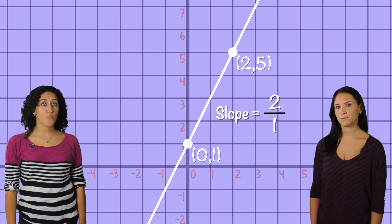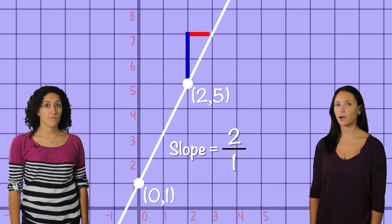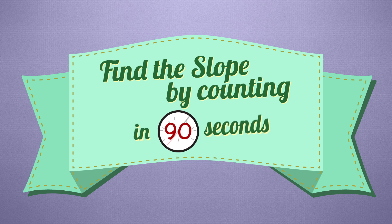To check, we can plot new points and see if they fall on the line. Here's 2 up and 1 over. It falls right on the line. And that's finding the slope by counting in 90 seconds.